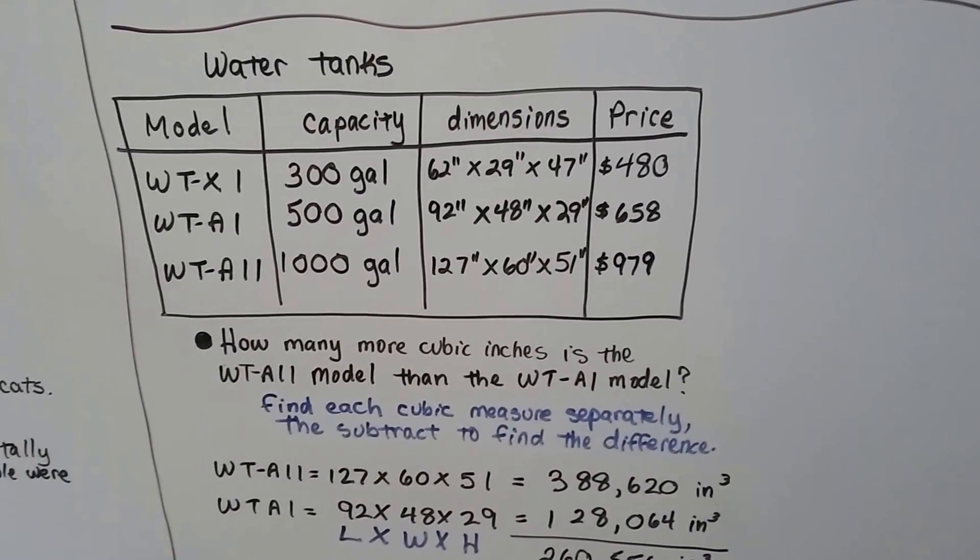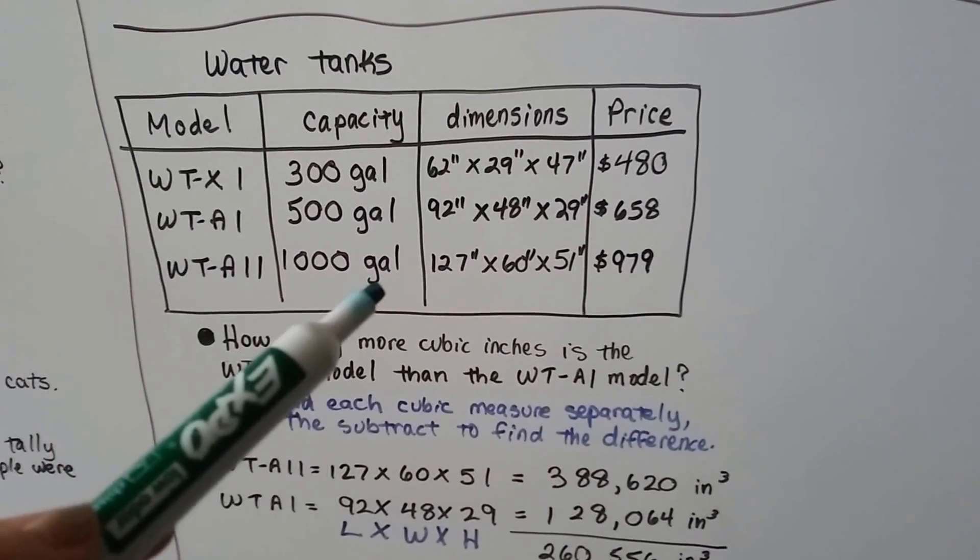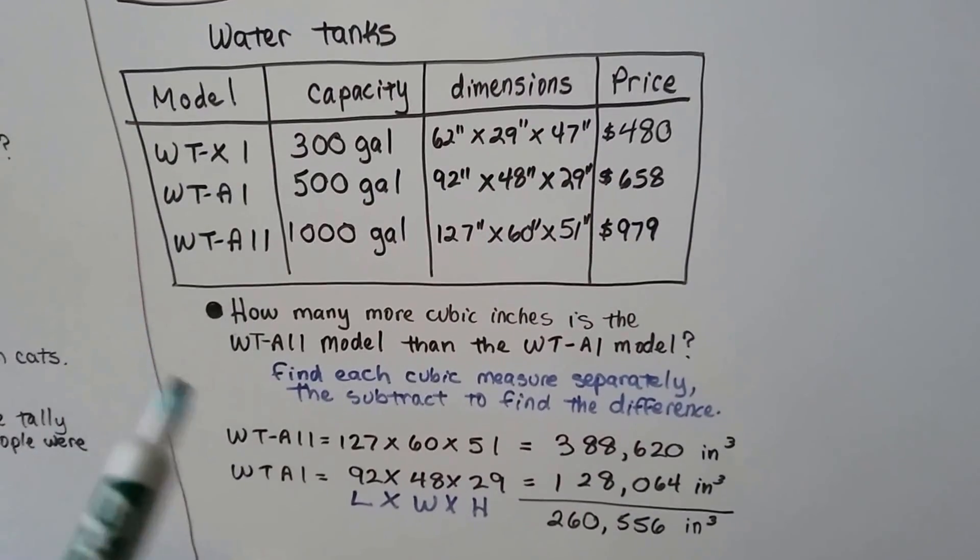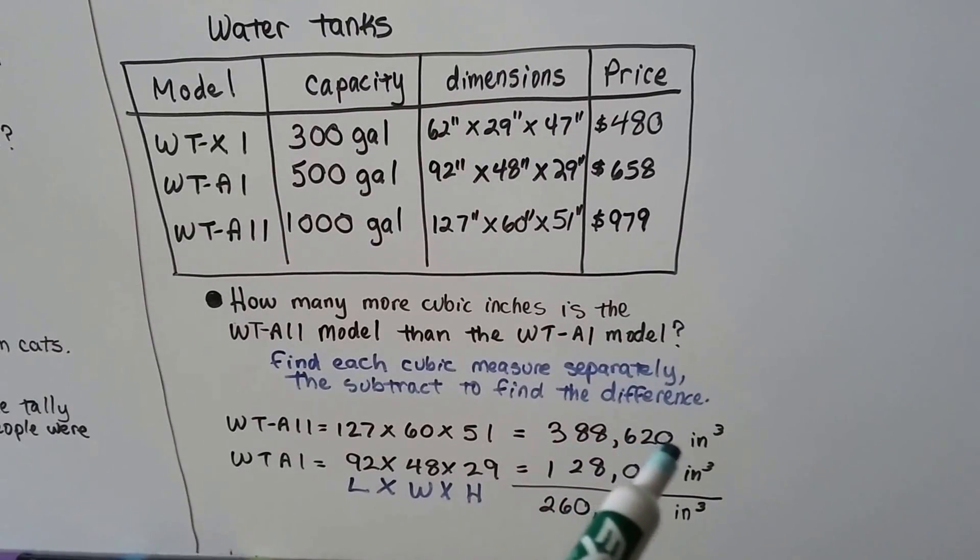So we need to find each cubic measure separately. And if you remember from before, we do length times width times height. So we can do 127 times 60 times 51. We get 388,620 inches cubed.